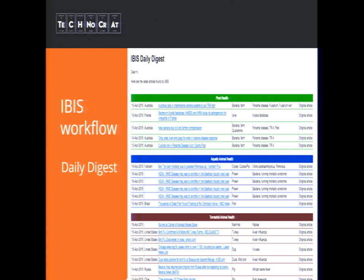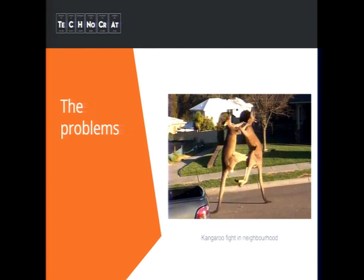This is what we produce every day — the daily digest. It has three sections: plant health, aquatic animal health, and terrestrial animal health. In each section we have links to our site, the time the article was produced, which country the article is from, and the original link to the source. Currently our site has almost 4,000 users from around the world and they all rely on these daily digests we produce.